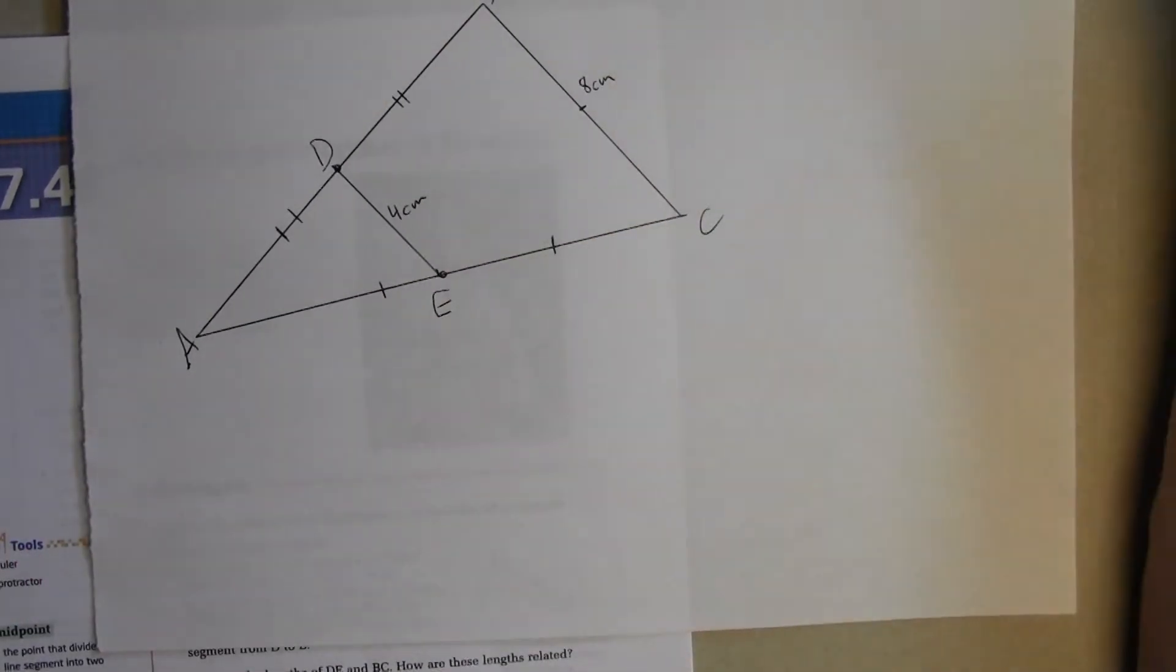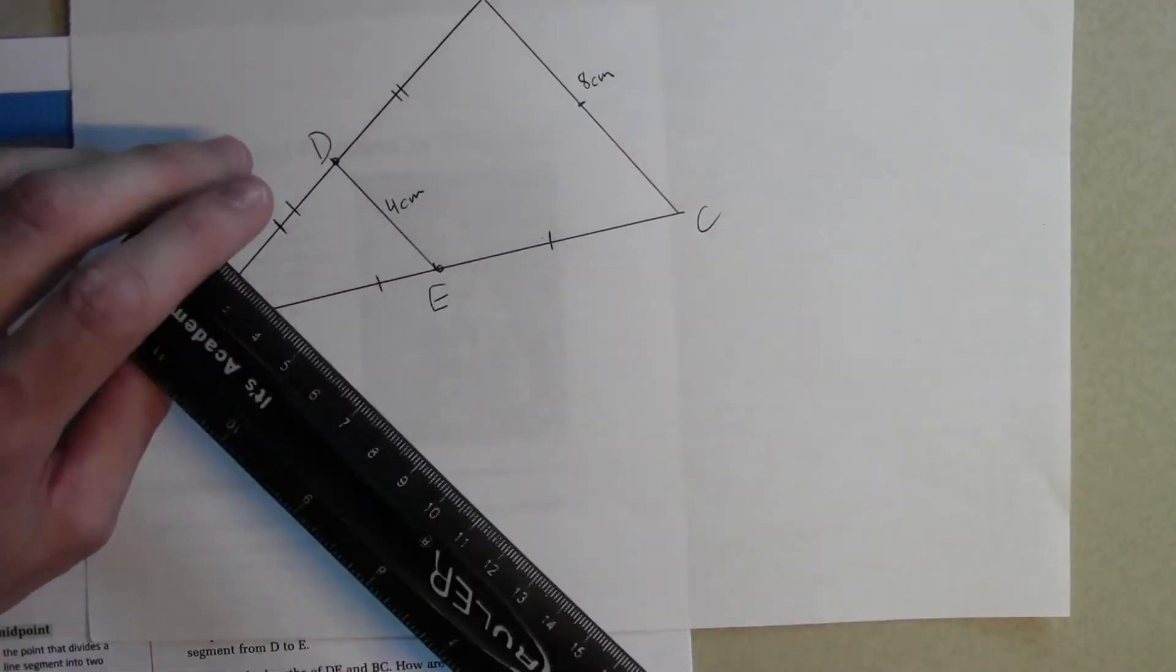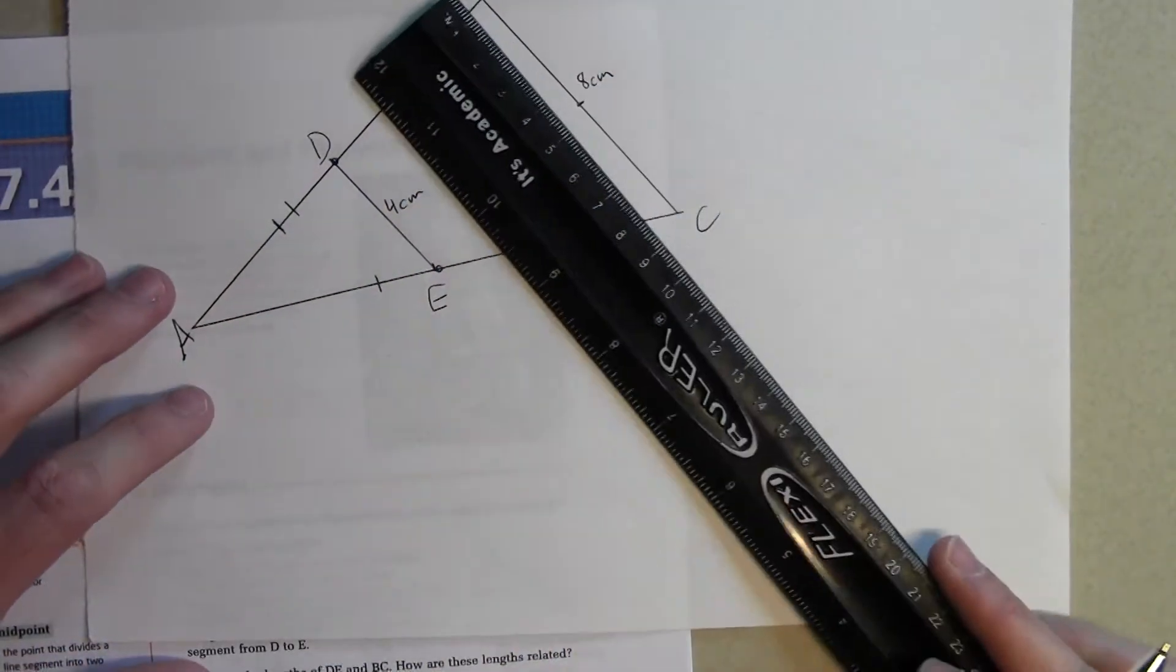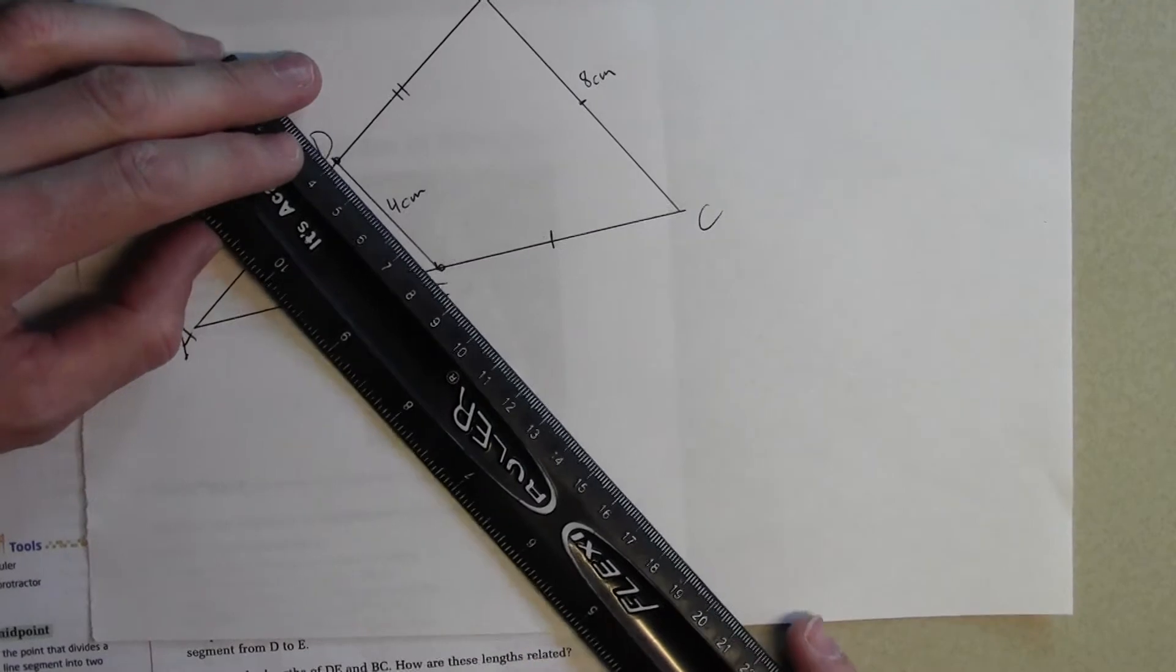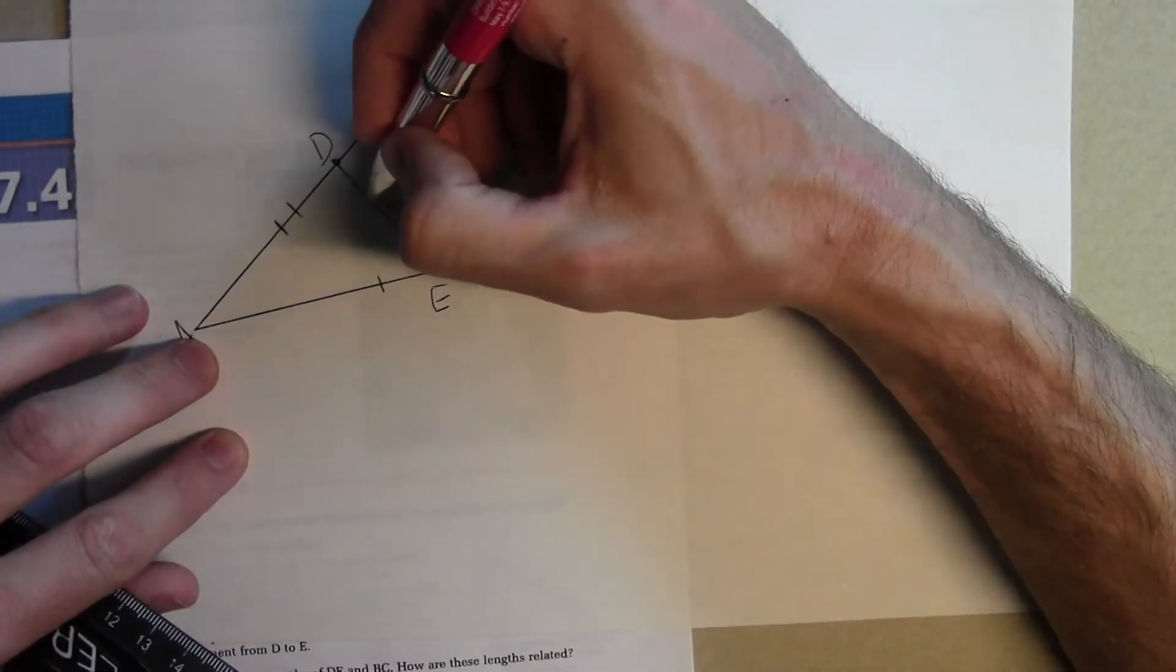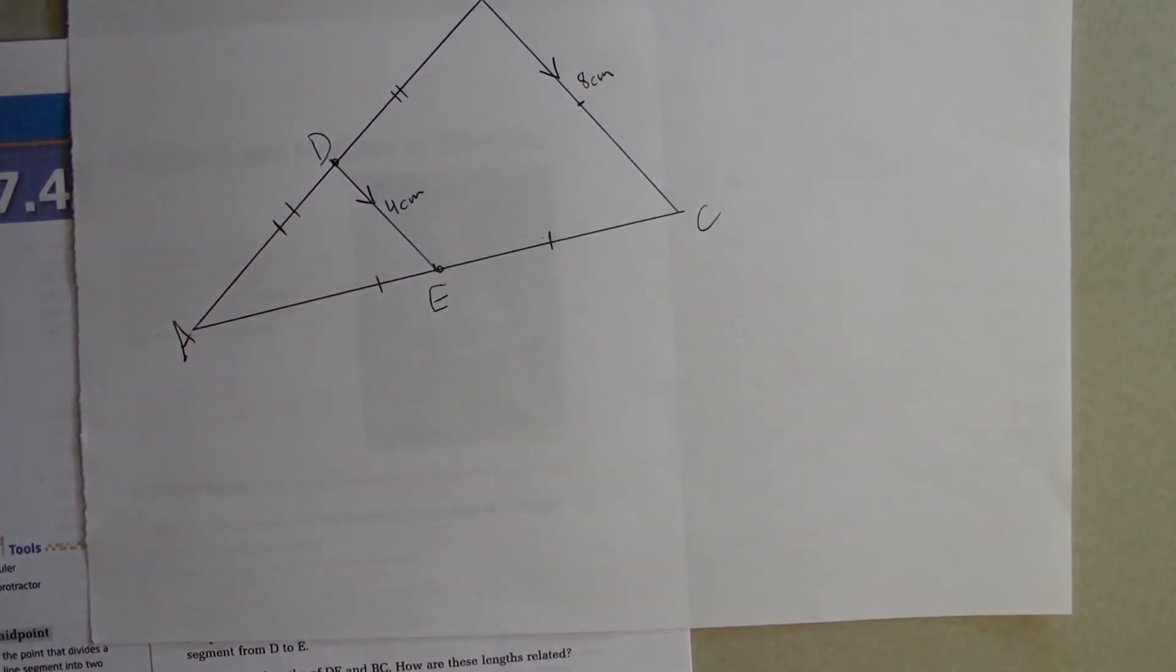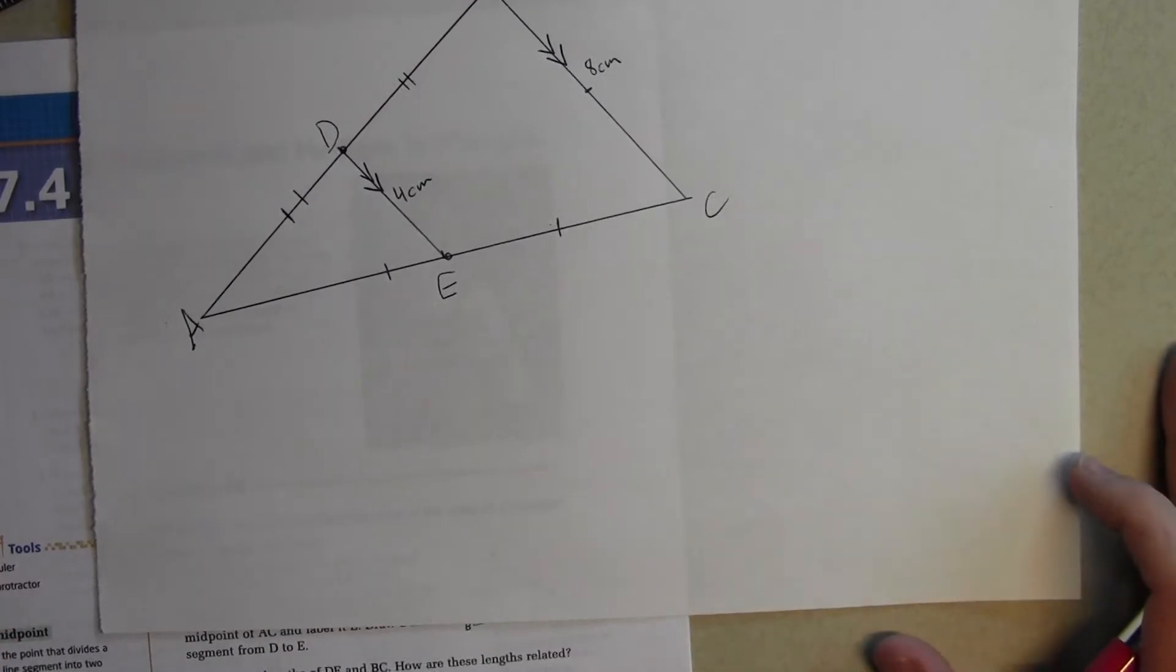If the co-interior angles formed by a transversal and two line segments are supplementary, the two segments are parallel. Determine whether DE is parallel to BC. We don't have a protractor here, but it's telling us if the angles are the same by a transversal. We can see that DE here is parallel to BC. So to demonstrate that, we would draw this arrow in. And typically you draw two arrows for parallel. You guys familiar with those arrows indicating parallel lines?